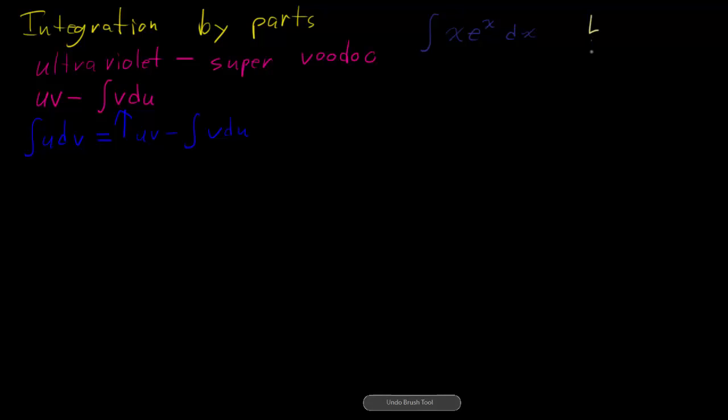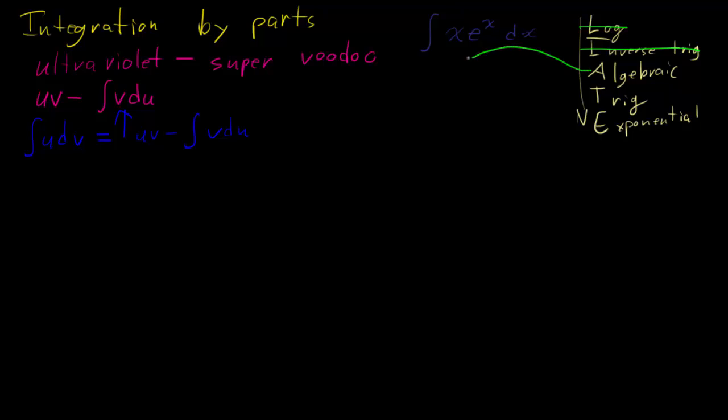One more mnemonic that's helpful here is LIATE, where I have logs, inverse trig, algebraic, trig, and exponential. And this, in descending order, is which portion of the function you want to choose as u. So in our case, we don't have a log. We don't have an inverse trig. But we do have an algebraic function, and that's x. So we're going to say that u equals x.